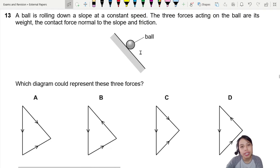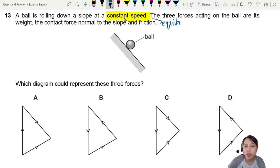Here's a ball just rolling down at constant speed. The three forces acting on the ball are its weight, contact force normal to the slope, and also friction. Constant speed means equilibrium, and equilibrium means there is no net force.